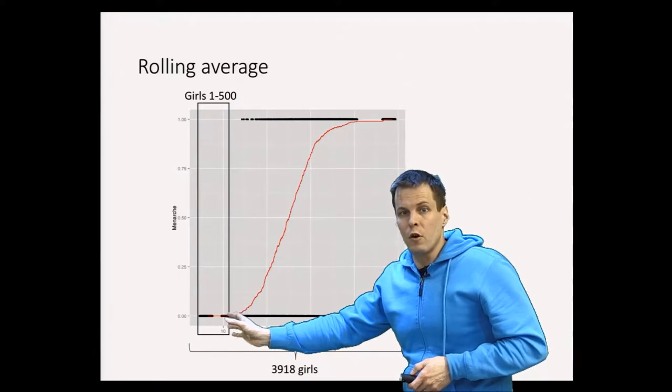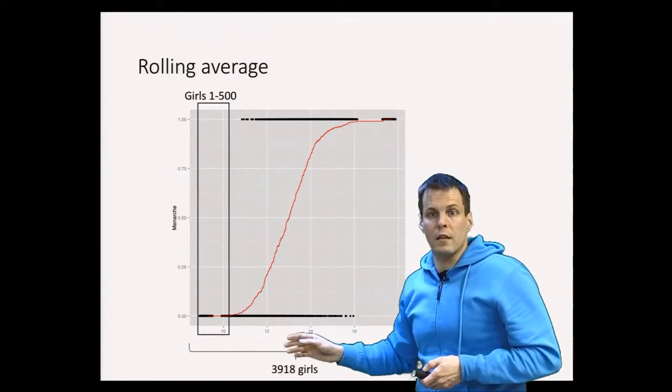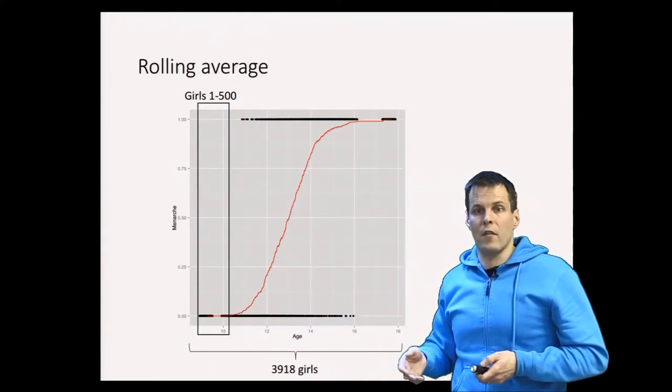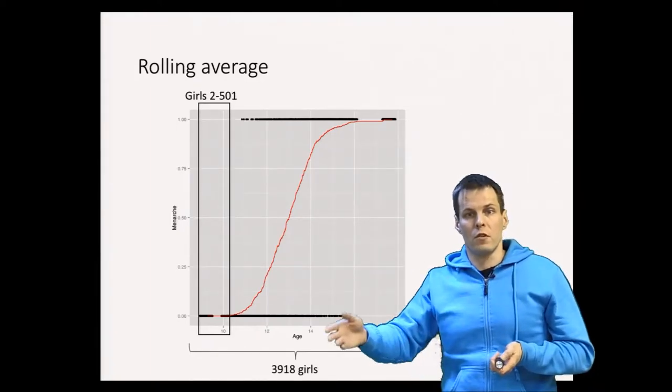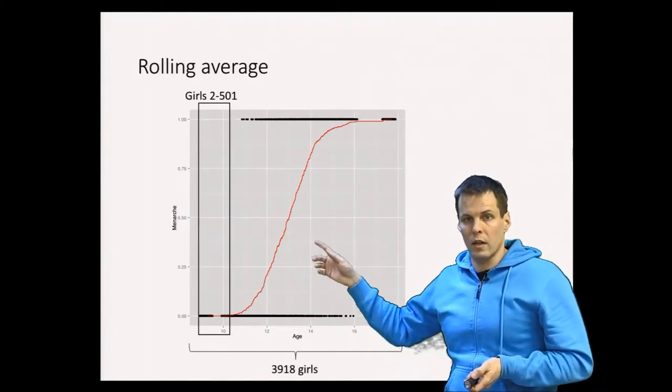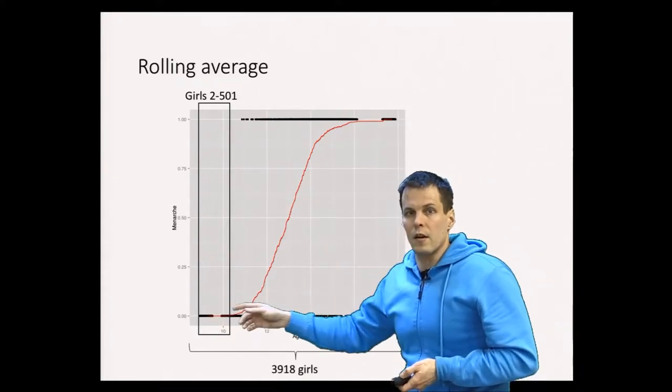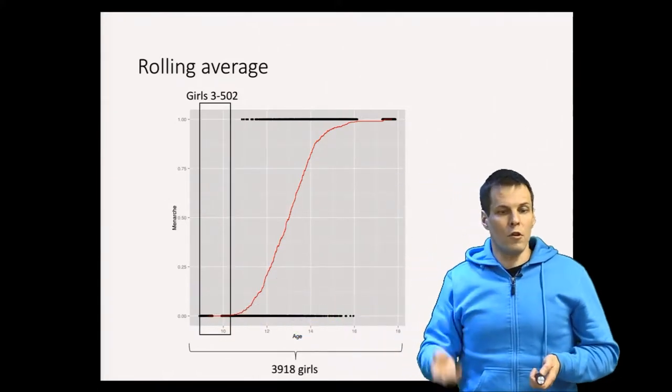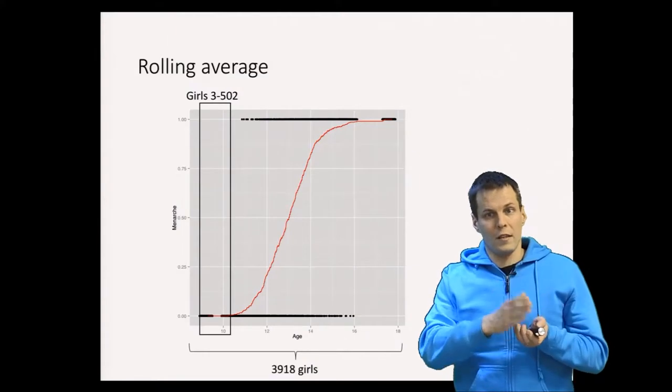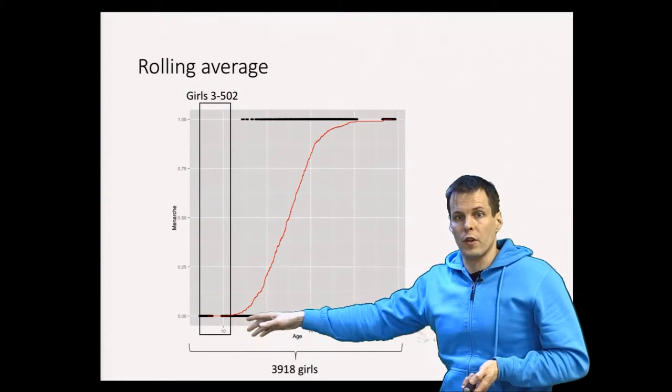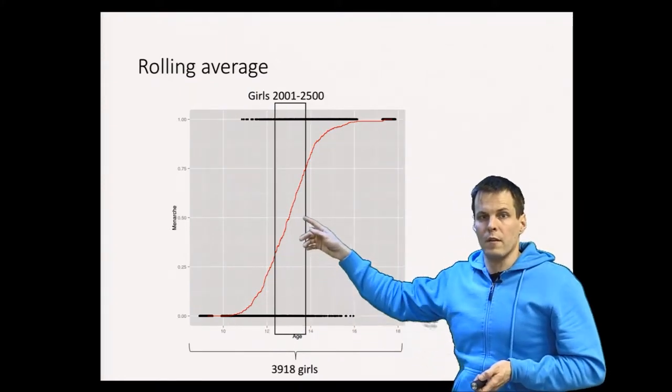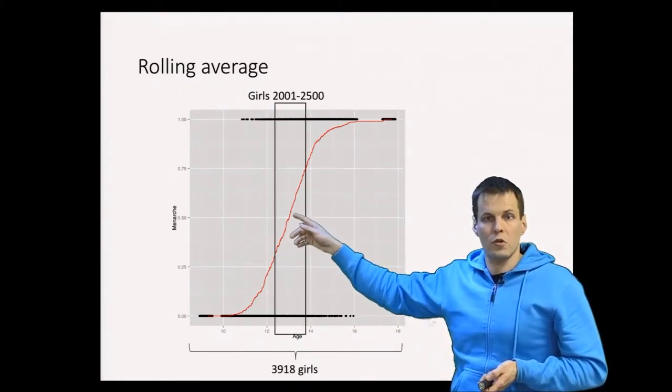Then we shift this window to the right a bit. We check the next 500 girls, so we go from the second girl to the 501st girl. We calculate the average and mark it here. Then we go to the third girl to 502nd girl and calculate the average for that subsample. We can see that the mean value is about 50 percent.